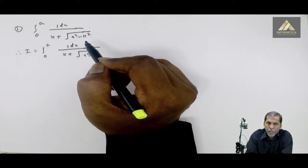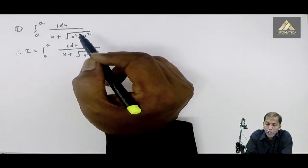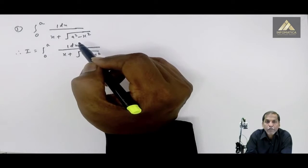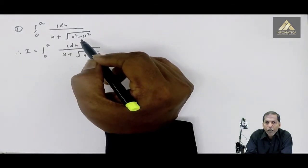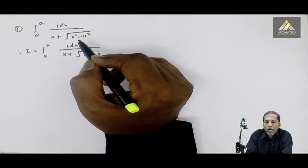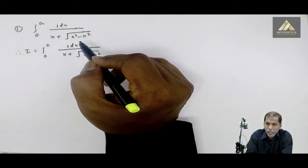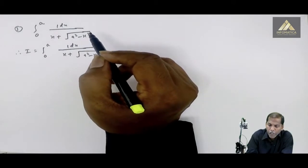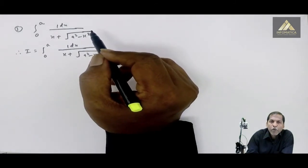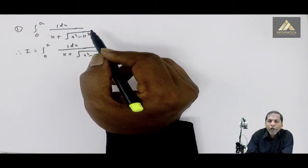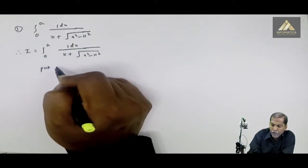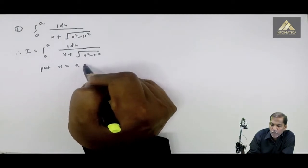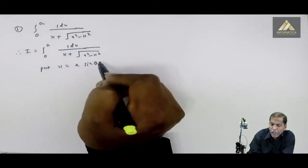And the third substitution: if the term inside the root is x square minus a square, then for that we put x equal to a sec theta or x equal to a cos theta. So in the present case, our term is square root of a square minus x square, so here we put x equal to a sin theta.